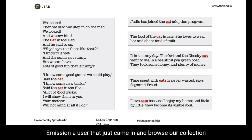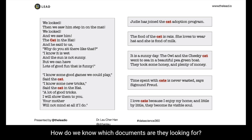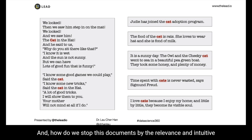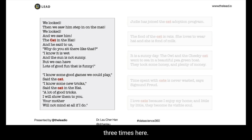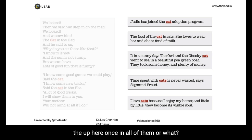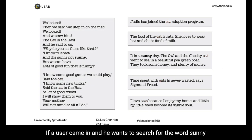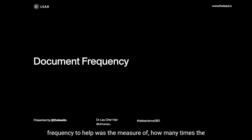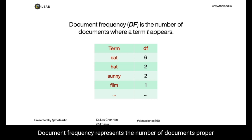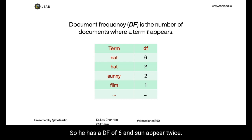Imagine a user browsing our collection and wanting to search for documents with the keyword 'cat.' How do we know which documents they're looking for, and how do we sort them by relevance? An intuitive way is to count the number of times the word 'cats' appears — the more it appears, the more relevant the document. This might work for the first document where 'cats' appears three times, but what about the rest where it appears only once? Or what if another user searches for the word 'sunny'? That's when we need another measurement called document frequency to measure how many times a term appears in our collection.